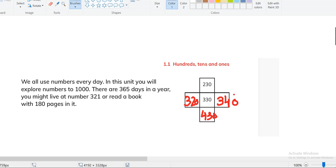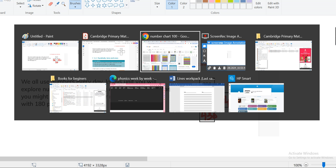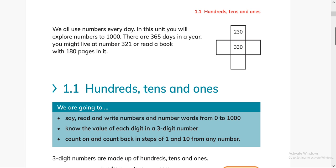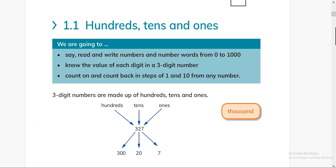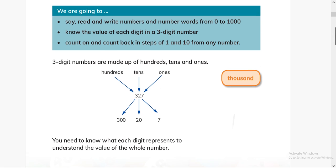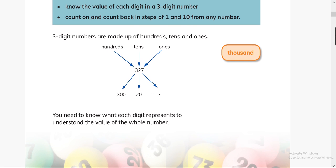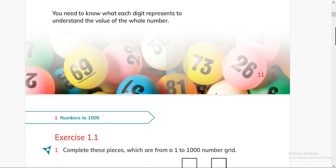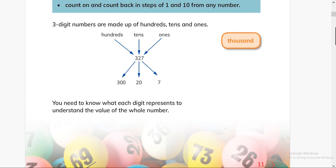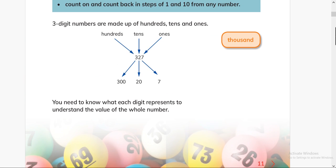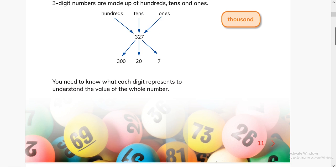Like this will be 320 and this will be 340. What is next on this page? Hundreds, tens, and ones. We are going to say, read, and write numbers. It is simple. This page is simple. They are just telling you that the first digit from left side is hundreds, then tens, and then ones digits.